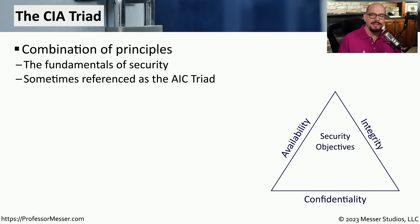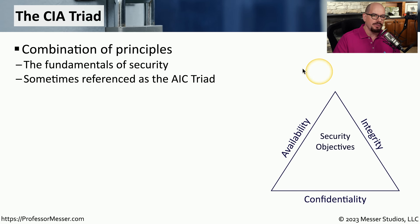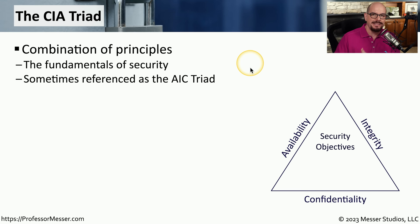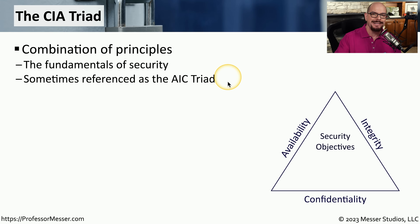The CIA triad is an easy way to remember the fundamentals of IT security. Sometimes you'll see this referred to as the AIC triad to differentiate it from the federal organization in the US called the Central Intelligence Agency. But since it's so easy to remember CIA, we often refer to the CIA triad instead of the AIC triad. Keep in mind that the CIA triad has nothing to do with the CIA being the Central Intelligence Agency.